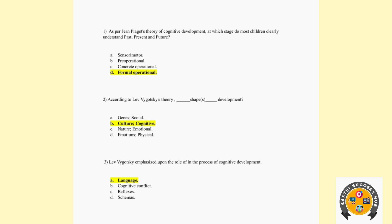Third question: Vygotsky emphasized the role of what in the process of cognitive development? Vygotsky's development involves culture, society, and language. So the answer is language.